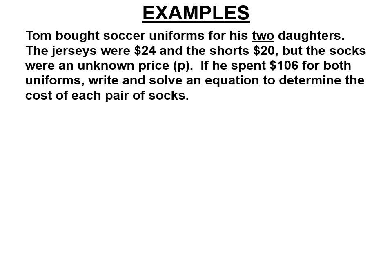Tom bought a soccer uniform for his two daughters. The jerseys were $24 and the shorts $20, but the socks were an unknown price. If he spent $106 for both uniforms, write and solve an equation to determine the cost of each pair of socks. So it's two times, because he has two daughters, right? Price of some socks plus some shorts plus a jersey. So two of those, and the total added up to $106.